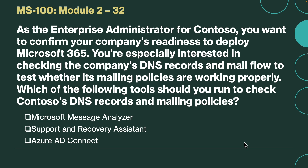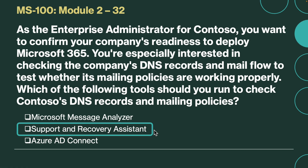Let's look at the next question. As the enterprise administrator for Contoso, you want to confirm your company's readiness to deploy Microsoft 365. You are especially interested in checking the company's DNS records and mail flow to test whether its mailing policies are working properly. Which of the following tools should you run to check Contoso's DNS records and mailing policies? The correct answer is the Support and Recovery Assistant. The SARA tool will check DNS records and mail flow to test whether your mailing policies are working properly.